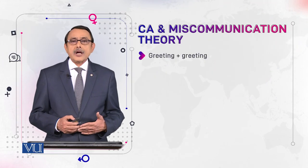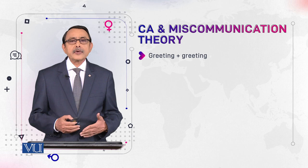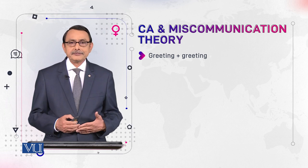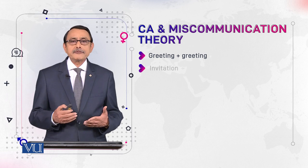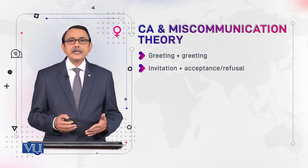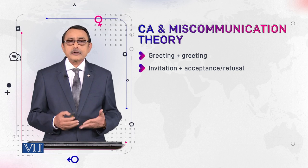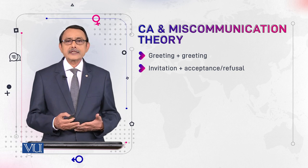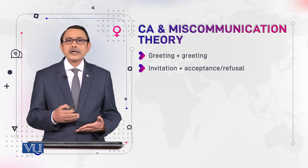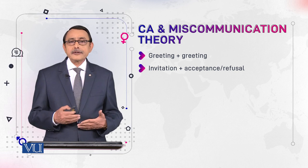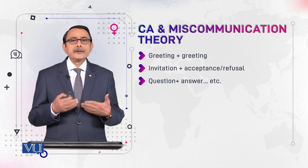For example, if one speaker greets, it is expected that the other would reply in the form of a greeting — greeting follows greeting, making an adjacency pair. If one speaker invites, the other speaker would accept or refuse the invitation. Similarly, if the first speaker asks a question, the second speaker is expected to provide an answer.